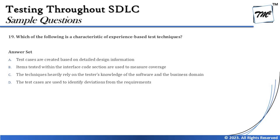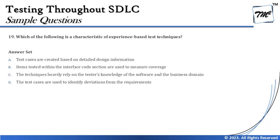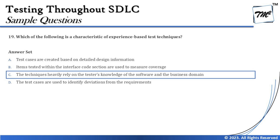Option D says test cases are used to identify deviation from the requirements. Identifying deviation from requirements could be static testing or a definition of defect, but not specifically experience-based testing — any testing activity leads to identifying deviations. So the correct answer is C: the technique heavily relies on the tester's knowledge of the software and the business domain.